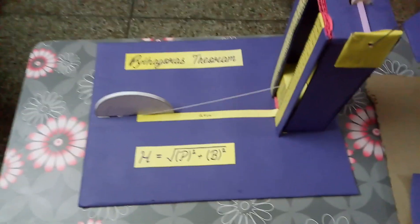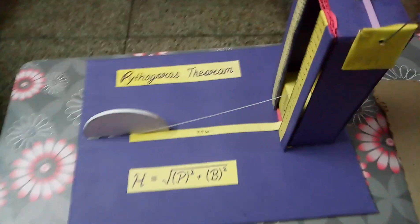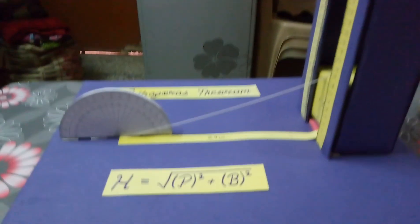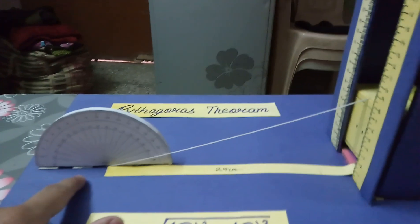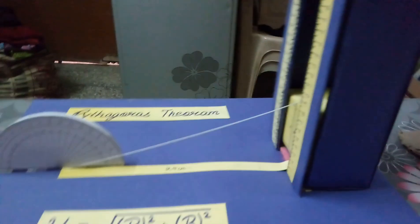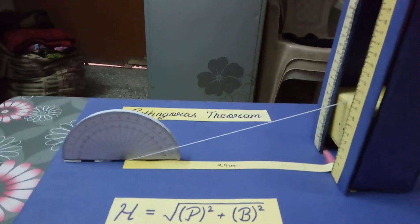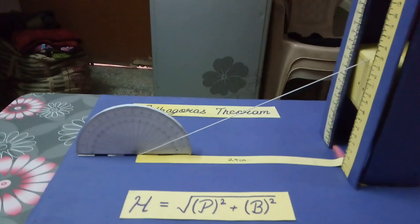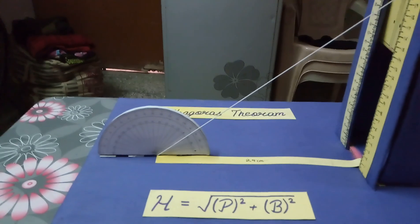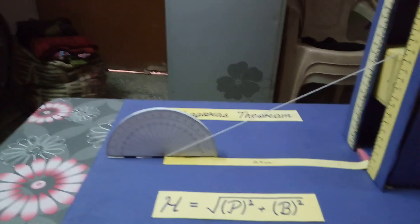Hi guys, today we have a model on Pythagoras theorem. As you can see, there is a D and a lift over here. When you increase the height of the lift, the length of the hypotenuse will also increase.